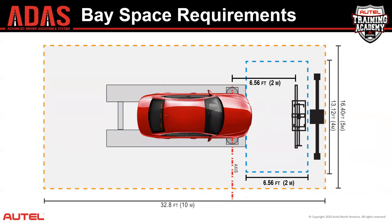If your calibration system has the ability to compensate for the height of the lift, you can easily perform calibrations right on your alignment rack. Our standard calibration frame has a built-in calculator where you input the height of the alignment lift, and it will compensate by increasing the target height to ensure the calibration target and the vehicle are on exactly the same plane, ensuring an accurate calibration.